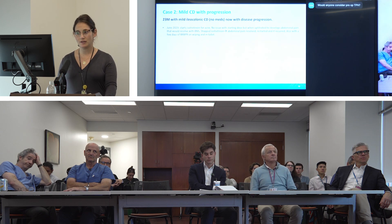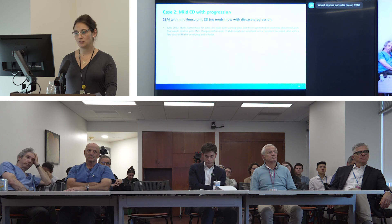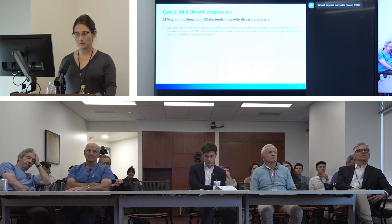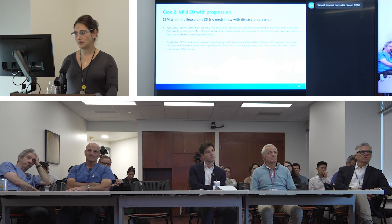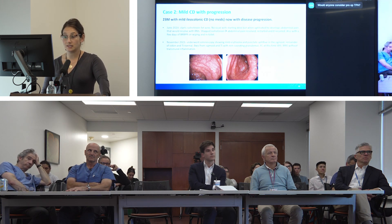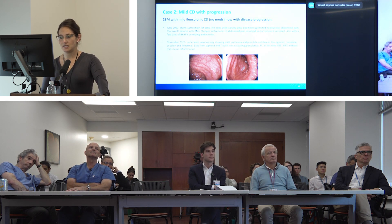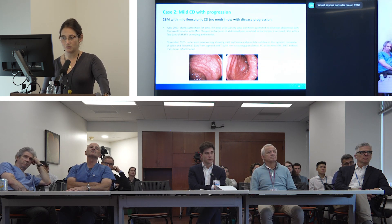In June 2023, he was totally well and then started isotretinoin for acne. Initially he was fine, but then he uptitrated the dose and developed abdominal pain that resolved with bowel movements. He stopped the isotretinoin, his pain resolved, restarted it and it recurred. He also had a few days of bright red blood per rectum when wiping, which prompted a colonoscopy. The colonoscopy showed mild erythema and punctate aphthae in the sigmoid. The remainder of the colon was normal, as was the terminal ileum, but biopsies from the sigmoid and TI showed non-caseating granulomas. Calprotectin at this time was 495, and the MRE showed no transmural inflammation.